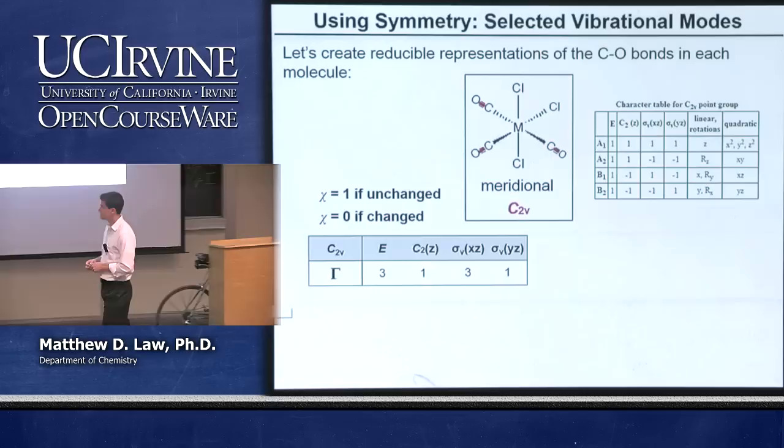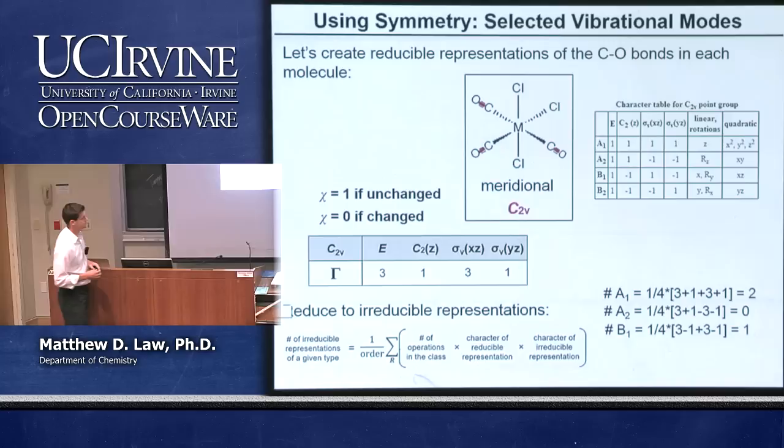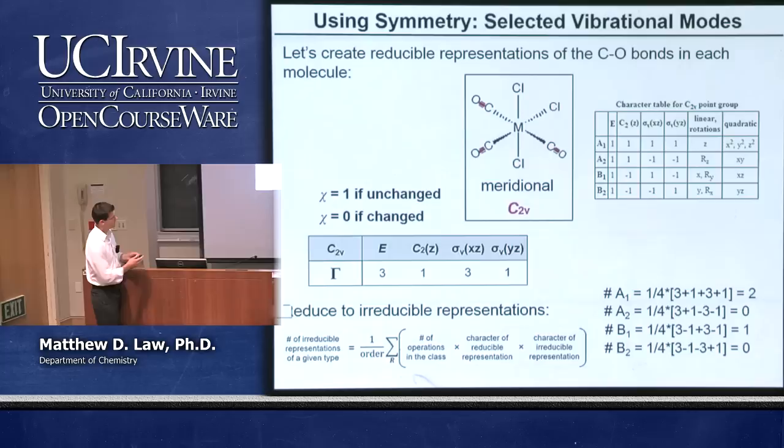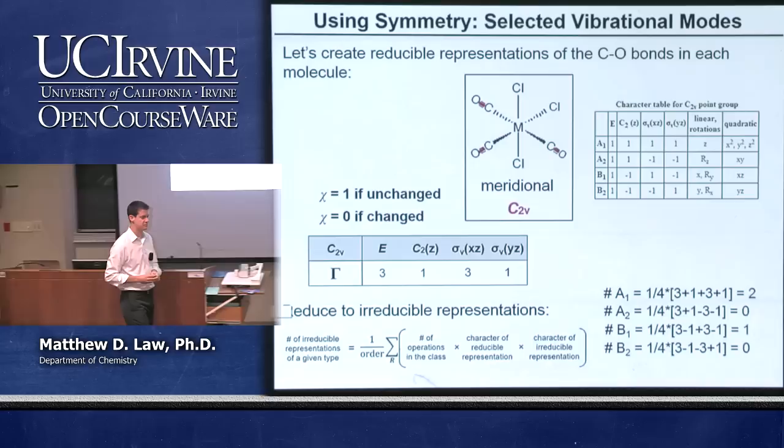We have our reducible representation and we want to reduce it to its irreducible components using the same approach. We're going to have 2 A1s, 0 A2s, 1 B1, and 0 B2s. We have a total character under identity of 3, which matches our reducible representation — confirming our irreducible set is complete.